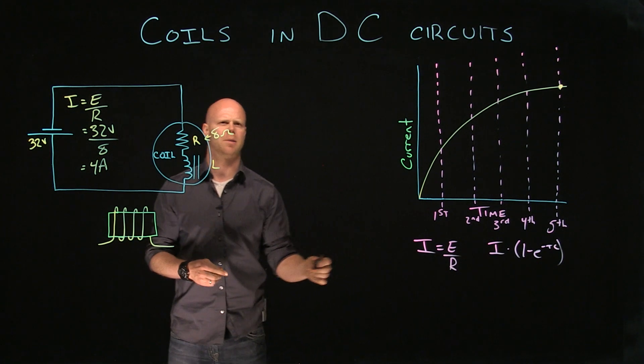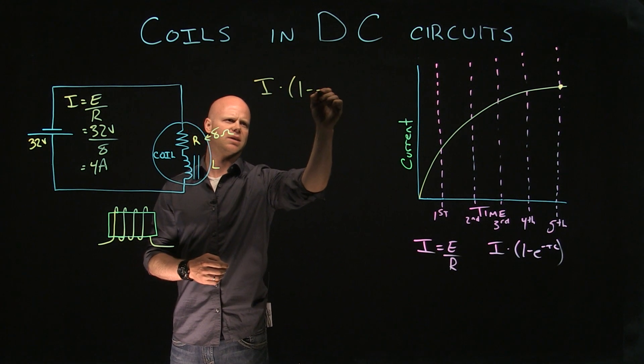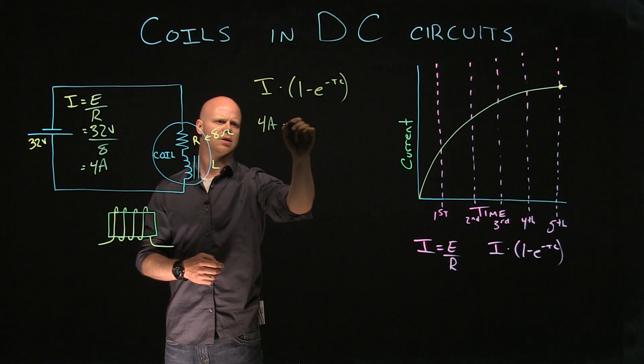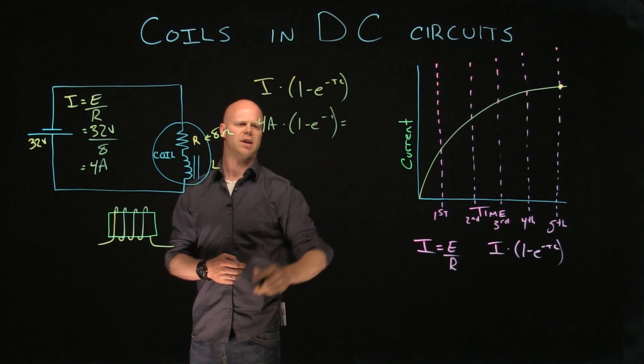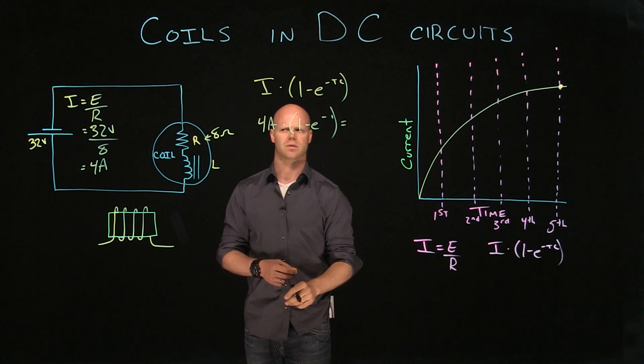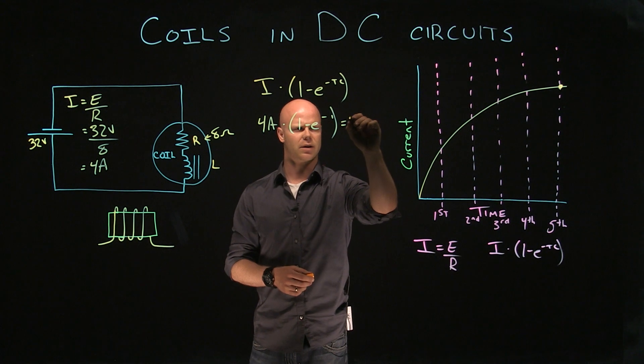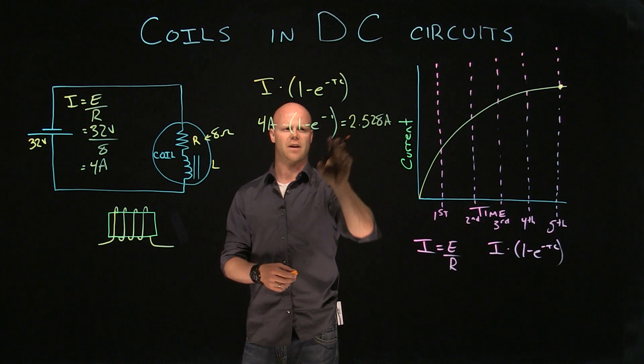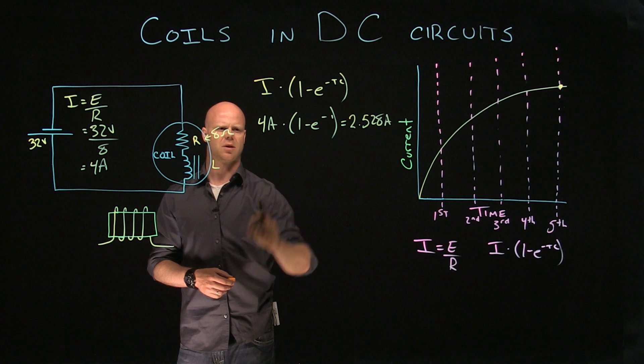So at the first time constant, if we take our maximum value of current, 1 minus e to the negative time constant, we substitute, so we have 4 amps times 1 minus e to the negative 1. This will give us 63.2% of the maximum value. That is roughly 2.528 amps, and you can check, is 2.528 amps 63.2% of 4? So that's at the first time constant.